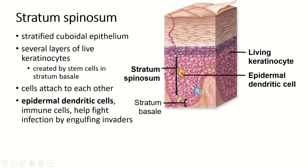This is a rather thick layer of stratified cuboidal epithelium. These cells aren't really square — they're actually in several different shapes — but they're not really tall, and they're not really flat. So they're categorized as cuboidal, and of course stratified because there are several layers of them.